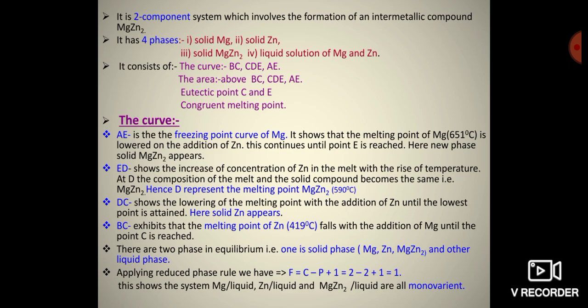Here, solid MgZn₂ appears. Curve BC exhibits the melting point of zinc, 419°C, which falls with the addition of magnesium until point C is reached. Along these curves there are two phases in equilibrium: one solid phase — MgZn₂ — and one liquid phase.